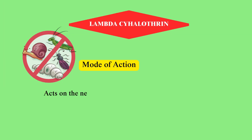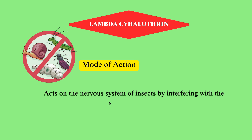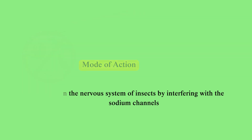Mode of action. Lambda-cyhalothrin acts on the nervous system of insects by interfering with the sodium channels, leading to paralysis and eventual death.